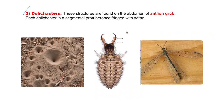Dolly casters are structures found in the antlion grub's abdomen. Each dolly caster is a segmental protuberance provided with setae. The antlion grub feeds on ants falling into its pit.